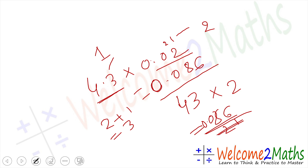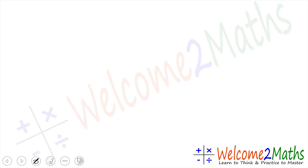So this is the answer — 0.086. After the decimal point you can put a zero on the left side. I hope you understand the multiplication of decimal numbers. See you again in a new class. Till then, take care of yourself. Bye!